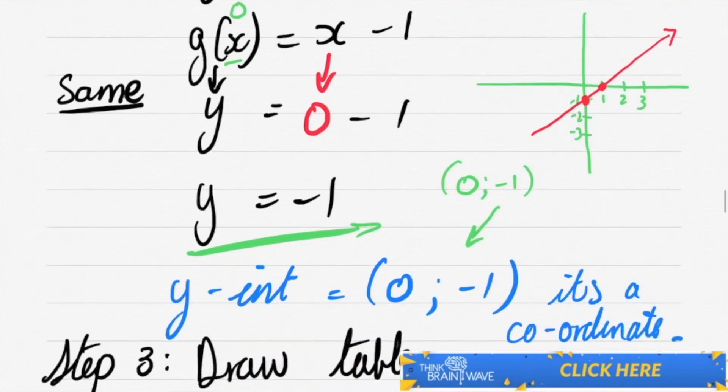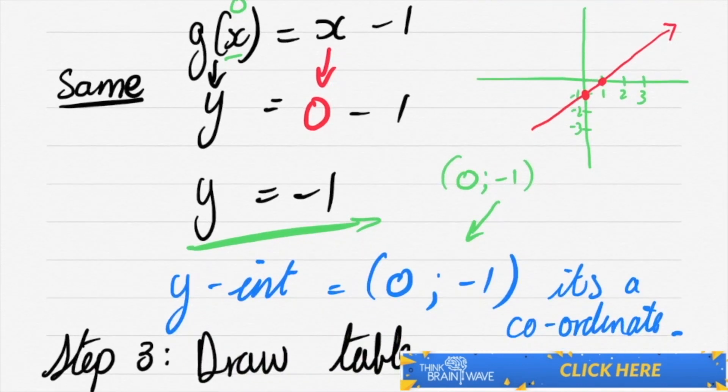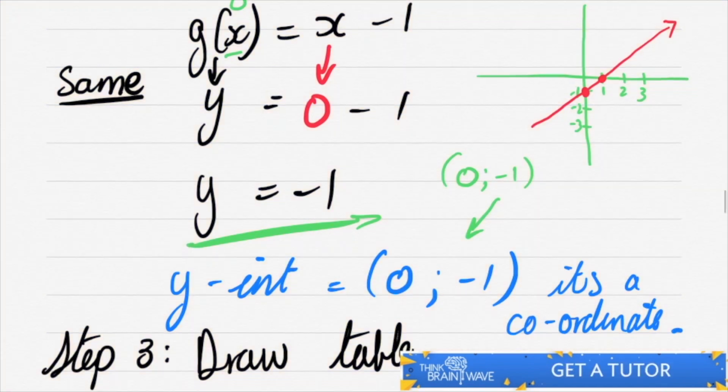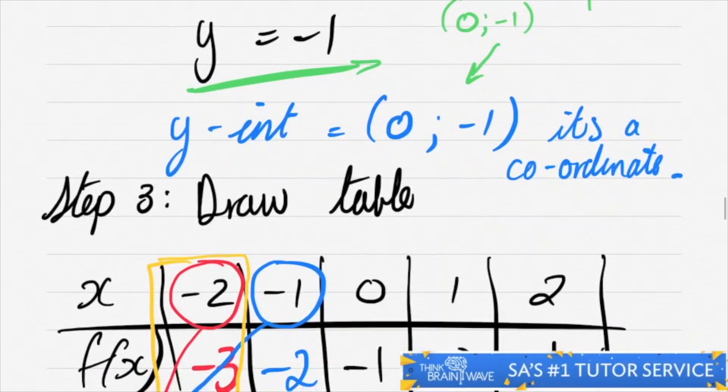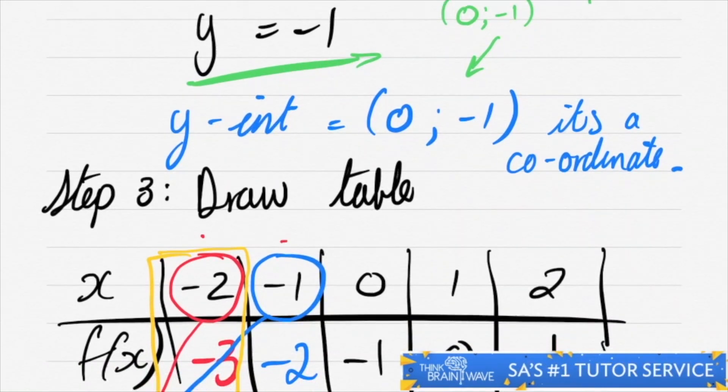However, there's another method which I'm showing you below, which is the drawing the table method. So this is our step 3. You generally start with -2, -1, 0, 1, and 2 for your x's. And then you plug this value into your f(x) or your g(x), whatever your y equation would be. And you solve.